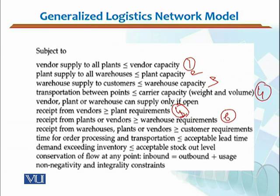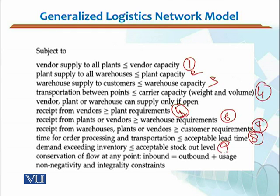The seventh constraint is that time for order processing and transportation should be less than or equal to the acceptable lead time. Your processing time including transportation should be less than the targeted lead time. The ninth constraint is that demand exceeding inventory should be less than or equal to the acceptable stockout level — if your acceptable stockout level is 5%, demand exceeding inventory cannot be more than 5%.